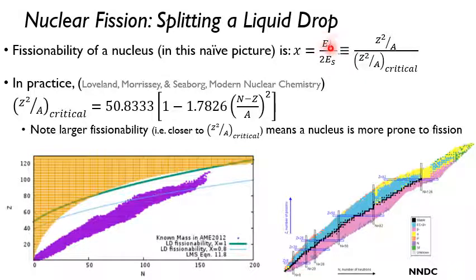If I then decrease fissionability to 0.8, so say we're approaching it, we're not exactly at it, but we're prone to fissioning. I get that sliced through the nuclear chart. Now let's go look over at reality.